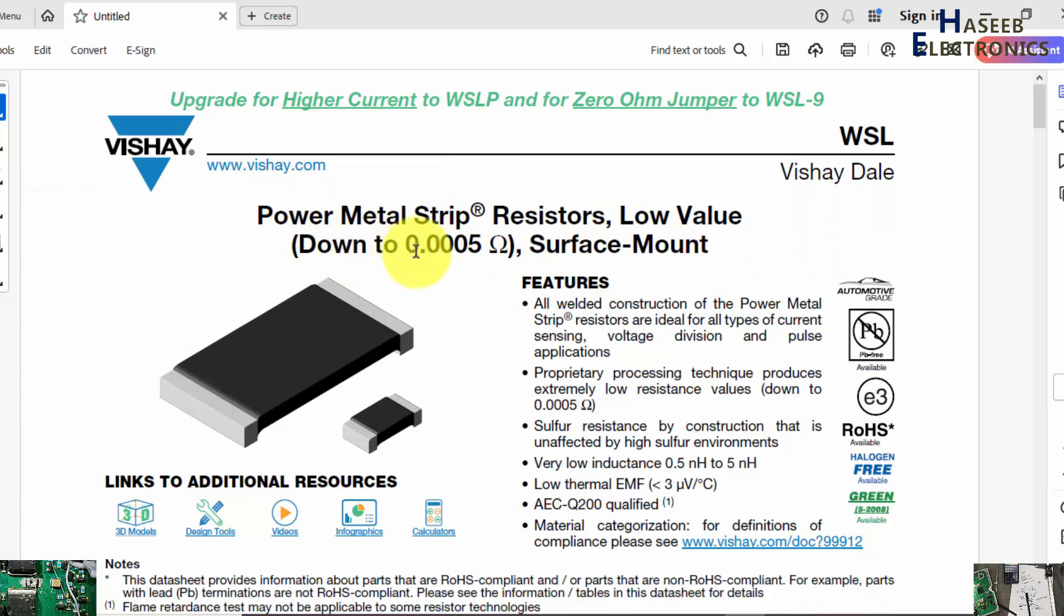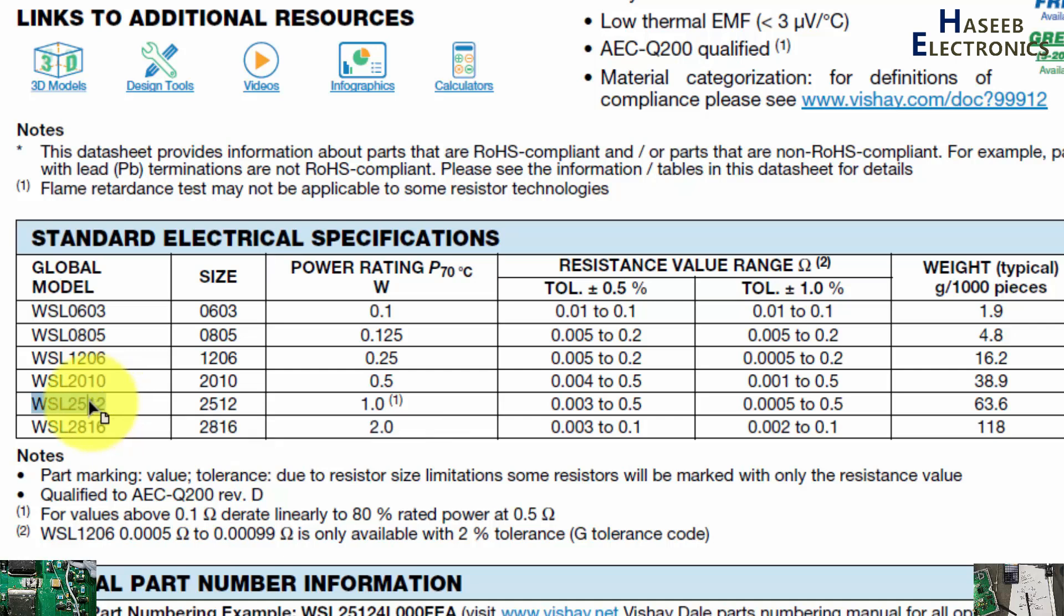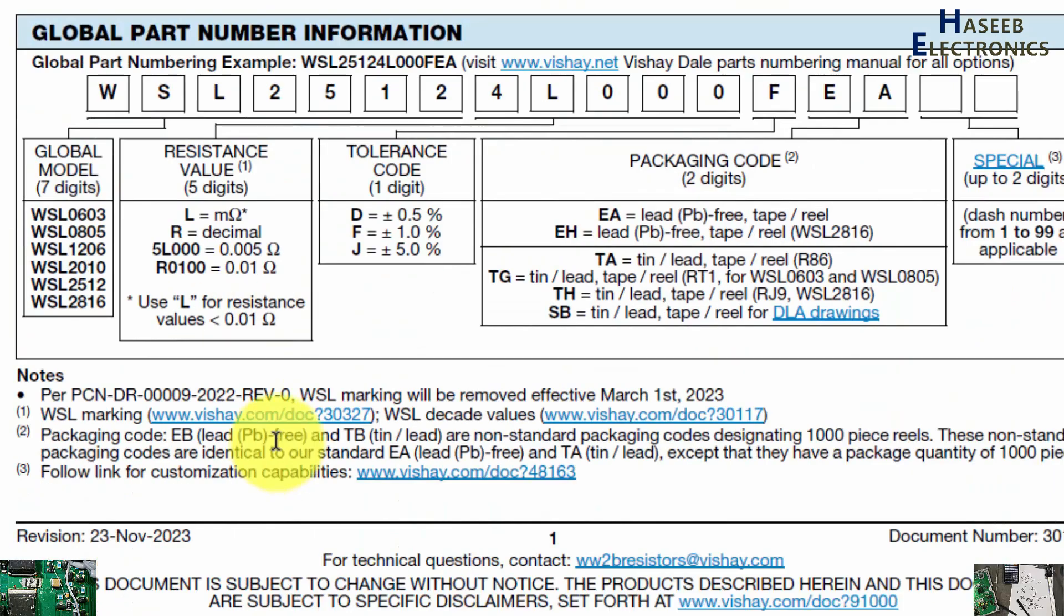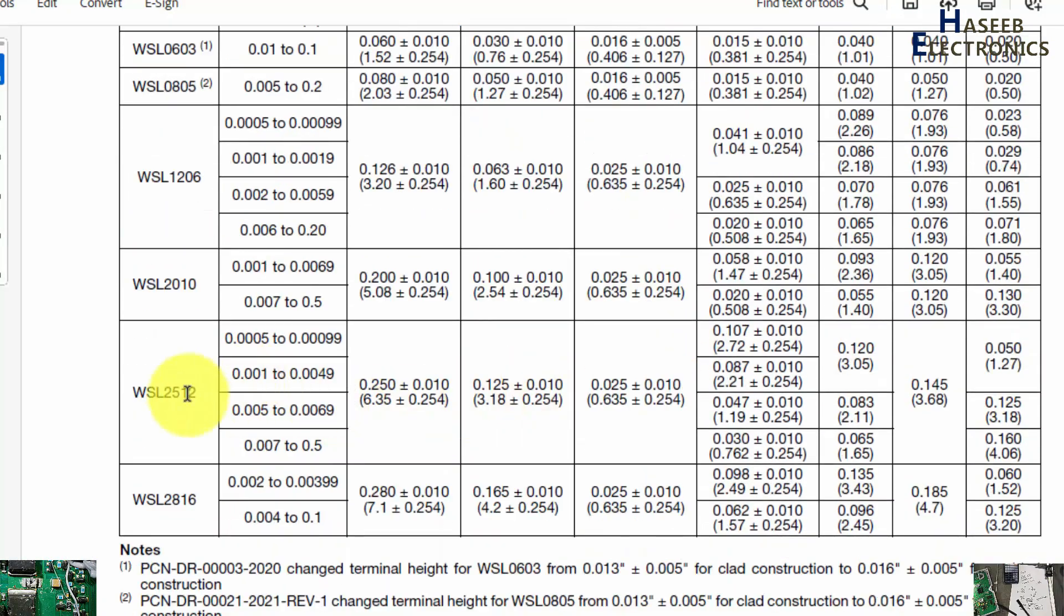SMD surface mount 2512. This is 25, it is in inches length and width. Its watt rating is 1 watt power rating at 70 degree centigrade, that is 1 watt. Resistance value range, so it is available in different value ratings from this table. Here are dimensions, this is WSL2512.